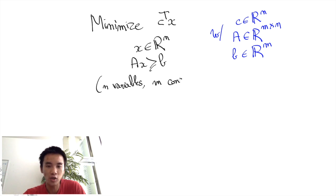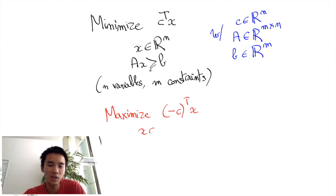It can easily be turned into a maximization program with the same number of variables and constraints by simply replacing C by minus C. We obtain the following equivalent maximization program: maximize minus C transpose X with X in R^n and AX greater or equal to B.